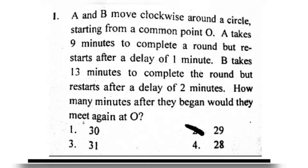This is the first question of Part A. We have to calculate the time when A and B meet when they are moving around a circle in a clockwise direction. The right option is 29 minutes, option number 2.